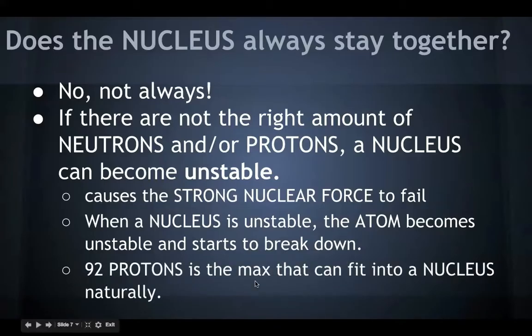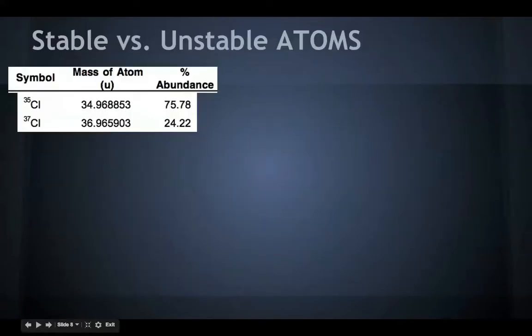92 protons is the max that can fit inside of a nucleus naturally. If you look at the periodic table, 92 protons represents the atomic number 92, which represents the element uranium. And this is why uranium is used in nuclear power plants and nuclear bombs, because it has the max amount of protons that you can actually have naturally on Earth.